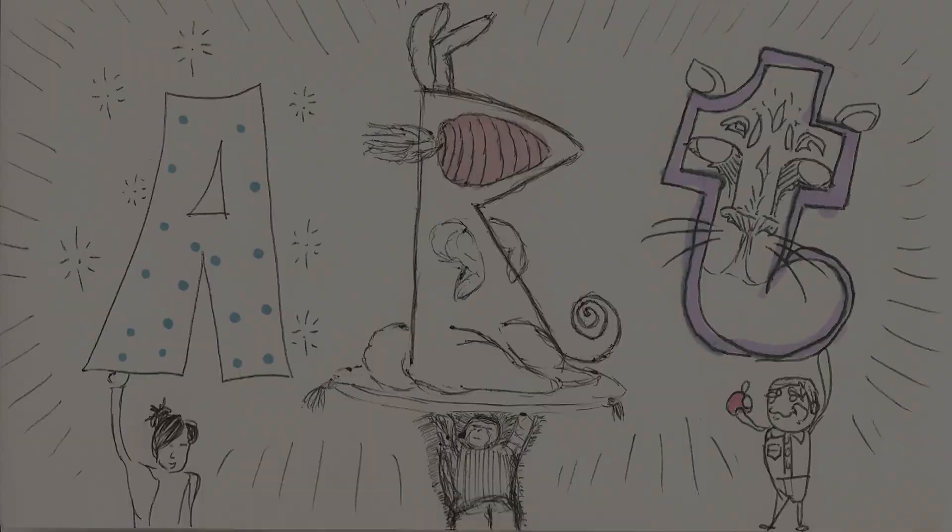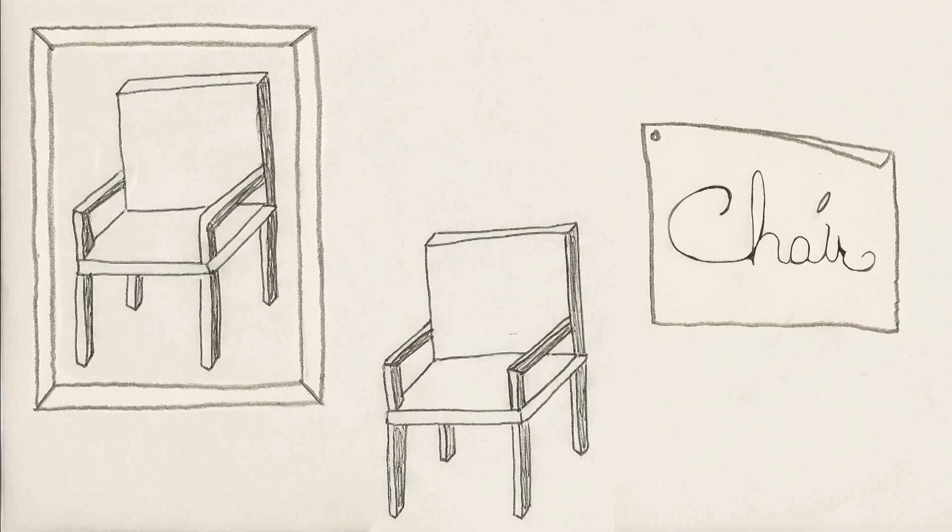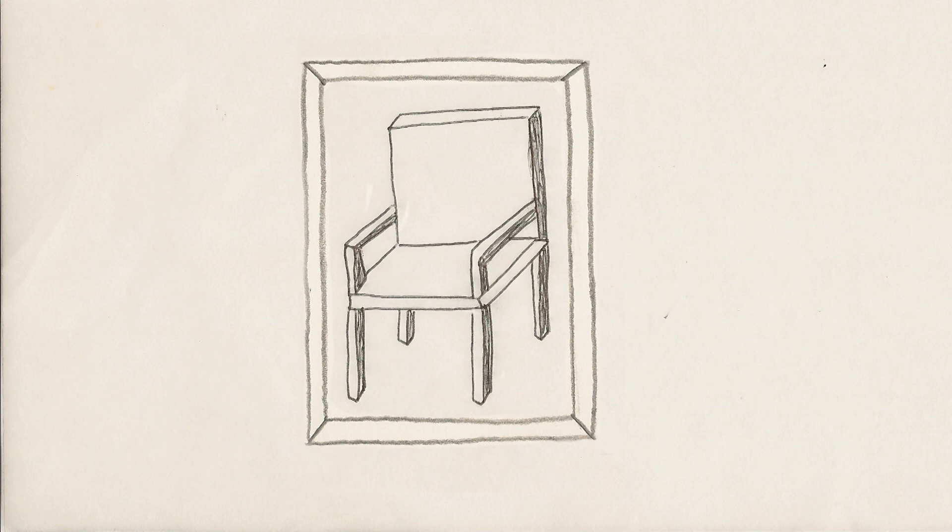In conceptual art, the idea is just as important if not more so than the final product. This is perfectly illustrated by the artwork One in Three Chairs by Joseph Kosut, which is composed of an actual chair, a scale photograph of a chair, and the printed word chair.